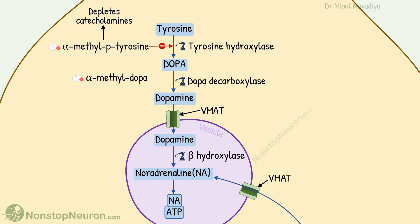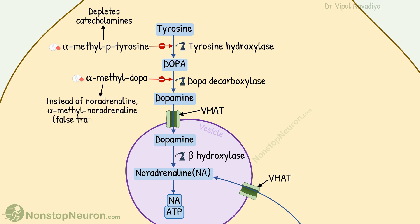Next we have alpha-methyldopa. It replaces dopa as a substrate for dopa decarboxylase. When this happens, instead of noradrenaline, alpha-methyl-noradrenaline is produced. This is a false neurotransmitter, so all the process of neurotransmission happens, but the next cell is not stimulated.